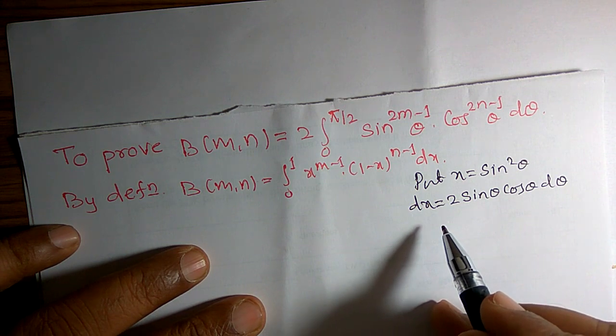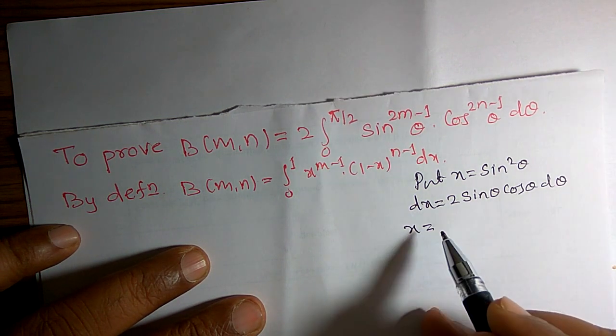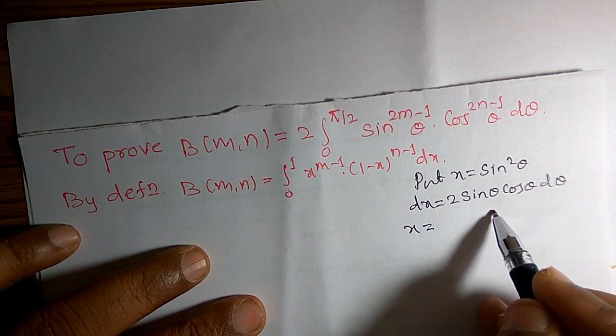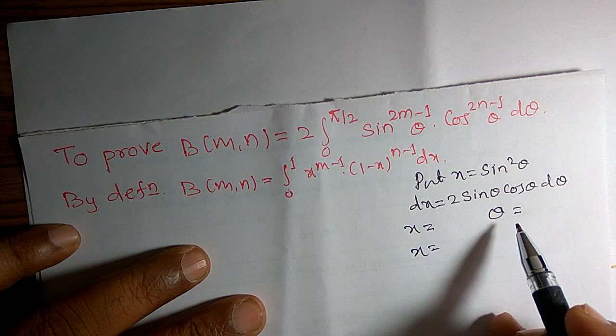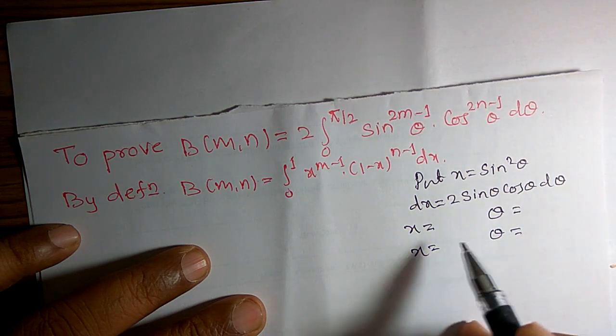When we use this method, limits will change. When x is equal to 0, what is the value of theta? When x is equal to 1, what is the value of theta?